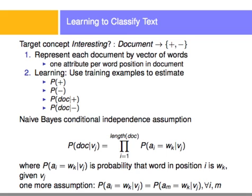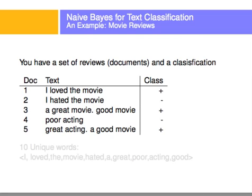Let's do a little example. Say you have a set of movie reviews — which I call documents — and their corresponding classification. Somebody actually read these movie reviews and put a class next to them. The first document says 'I loved the movie' and it's classified as positive. The second says 'I hated the movie' — negative. The third says 'a great movie, good movie' — positive. The fourth says 'poor acting' — negative. And the fifth says 'great acting, a good movie' — positive. Movie reviews can be a lot longer than this, but for illustration purposes these are all the reviews I have for training. You would usually have on the order of thousands.